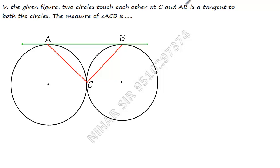Let us solve this question. This is very easy but at a first look you might find it difficult. In the given figure, two circles touch each other at point C. AB is a tangent to both the circles. We need to find angle ACB.